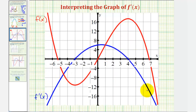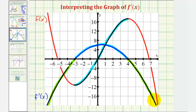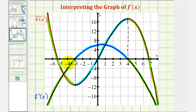We have the derivative function graphed here in blue and the original function f of x graphed in red. Notice where the derivative function is positive, f of x is increasing over this interval. And where the first derivative is negative here and here, our function is decreasing here and here. The derivative function is zero at x equals negative three and at x equals positive four, right where the function changes from decreasing to increasing and increasing to decreasing. At the critical number x equals negative three, we have a low point or a relative minimum, and at x equals four, we have a high point or a relative maximum.